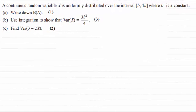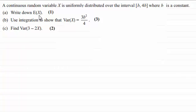Hi there. For this example, we're given that a continuous random variable x is uniformly distributed over the interval b to 4b, where b is a constant. In part a, we've got to write down E(x) for one mark. In part b, use integration to show that the variance of x equals 3b squared all divided by 4 for 3 marks. And in part c, find the variance of 3 minus 2x for 2 marks.